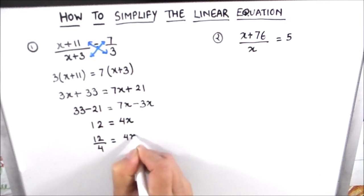So this is 12/4 is equal to 4x divided by 4, so this 4 gets cancelled, this is 4 times 1 and this is 4 times 3. So the value of x comes out to be 3. This is how we can solve these type of equations using the cross multiplication method. Let us move on to our second example.